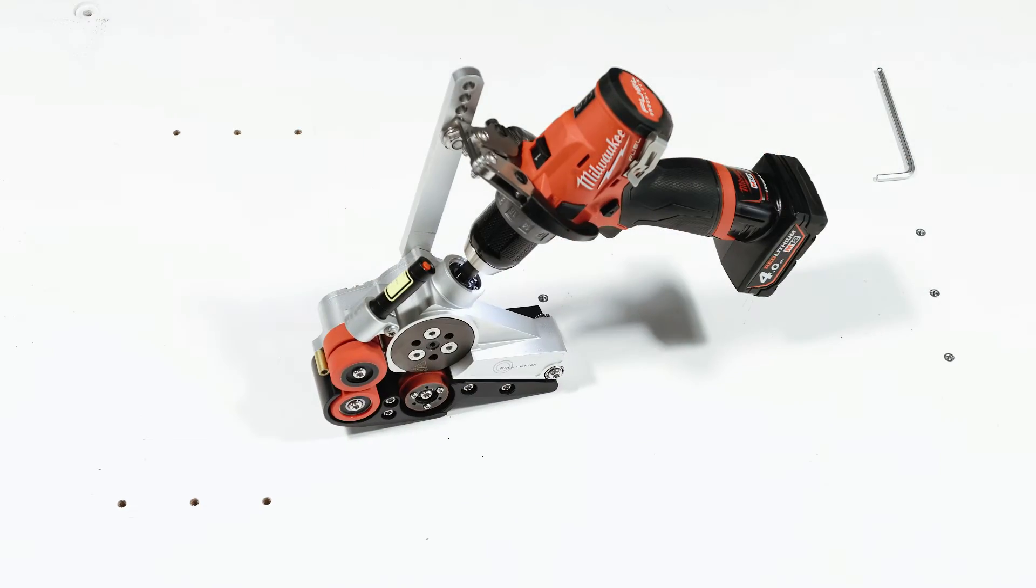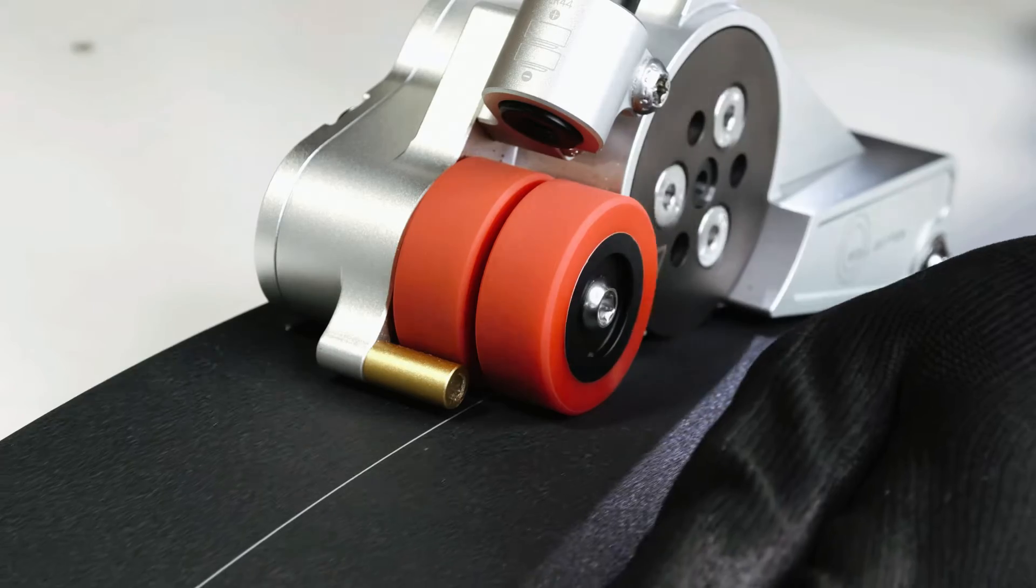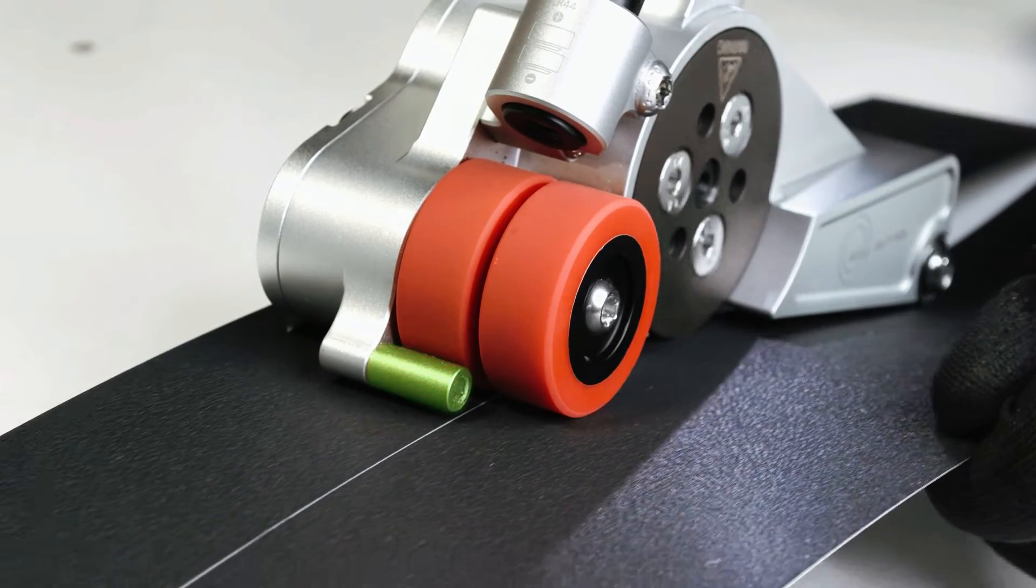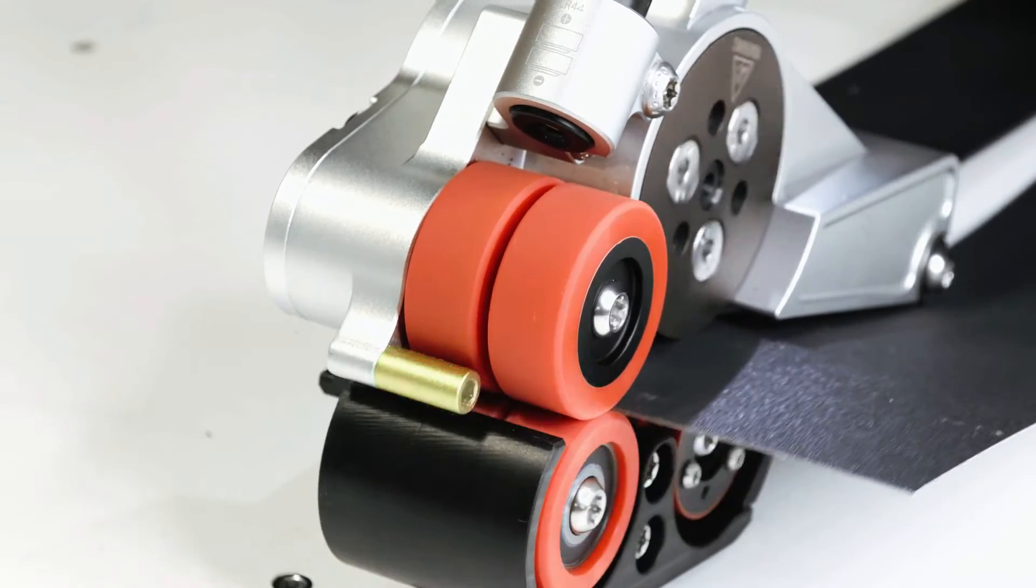The roll cutter is now ready to be used. Insert the metal sheet between the two front red wheels. When using the roll cutter without the laser, use the gold marker for direction.